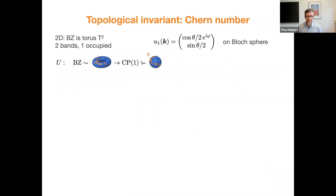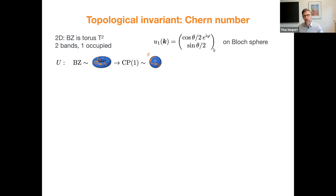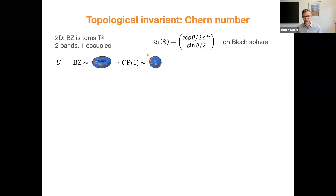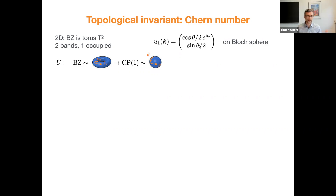I want to go a little deeper and explain why this is called topological by considering a 2D Chern insulator. In the simplest case with two bands — one occupied, one empty — the relevant information is contained in the occupied band Bloch eigenstate, which depends on momentum in the 2D Brillouin zone. The Brillouin zone is a two-torus from which kx and ky take values between 0 and 2π. I can parameterize the Bloch eigenstate as a two-spinor where the θ and φ angles depend on kx and ky.